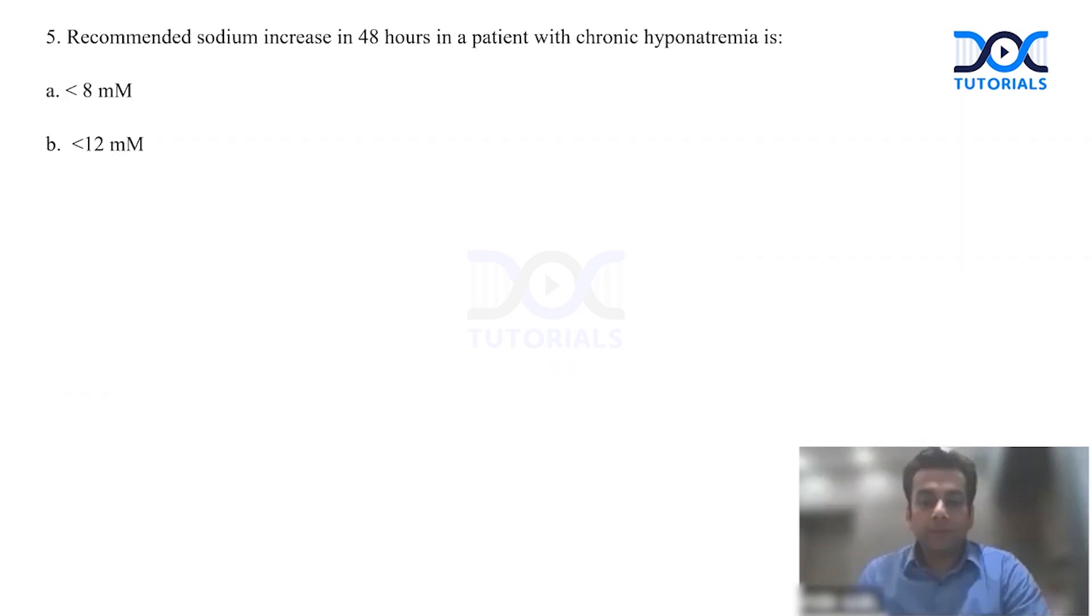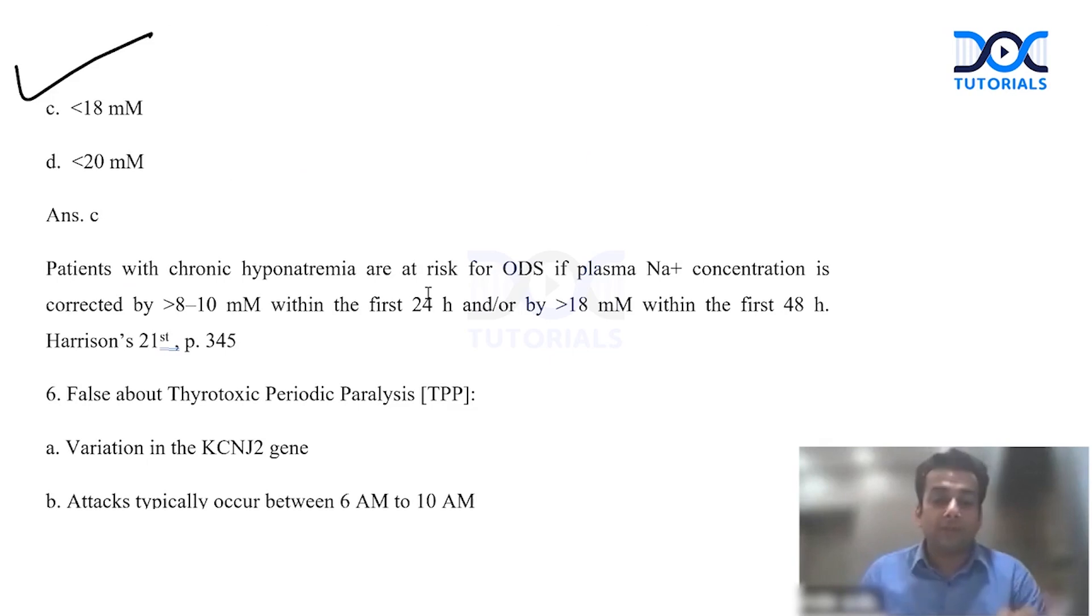The next question is: the recommended rise of serum sodium in 48 hours in a patient of chronic hyponatremia is - in 48 hours you expect the rise to be less than 18 millimoles. You don't expect the rise to be more than 18 milliequivalents per liter in a patient of chronic hyponatremia. Am I clear?